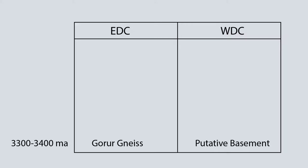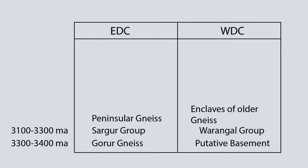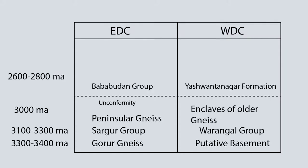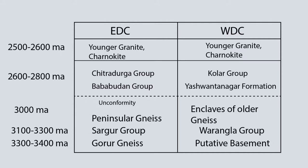The lower unit of Dharwar Craton is called Older Sequence that formed before 3000 million years ago, then the Dharwar Supergroup which formed about 2800 to 2600 million years ago. Lastly, the Younger Granitoids which formed about 2600 to 2500 million years ago along with Charnockitization.